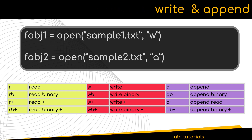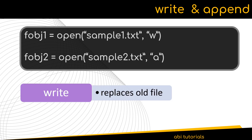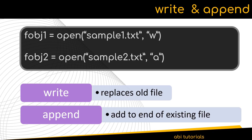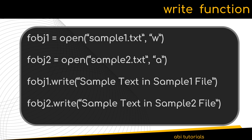Now we will look into the write and append operations. To write or append to a file, we have to open it in either write mode or append mode. Opening the file in write mode will always create a new file, and if a file already exists, the w mode will replace the old file with the new file. If you open a file in append mode, the existing file will not be replaced; instead, the new content will be added to the end of the existing file. Both write and append mode will create a new file if there is no existing file. The write() function is used to write a string to a file once it is opened in append or write mode.